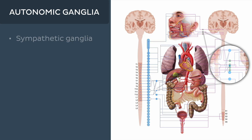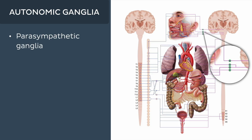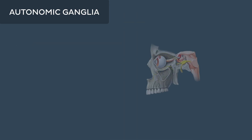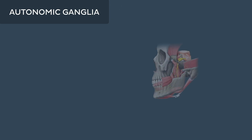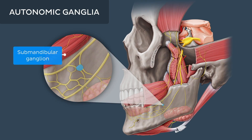And the parasympathetic ganglia, which include four cranial nerve ganglia — for example the ciliary ganglion or the submandibular ganglion — as well as terminal or intramural ganglia that lie close to or within their respective organs.